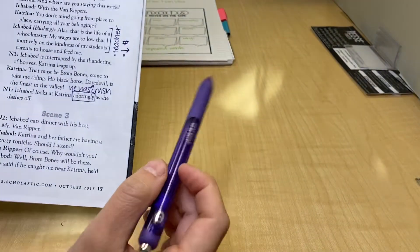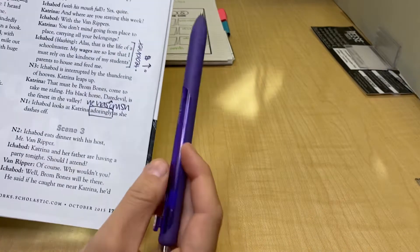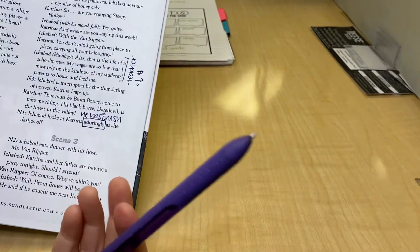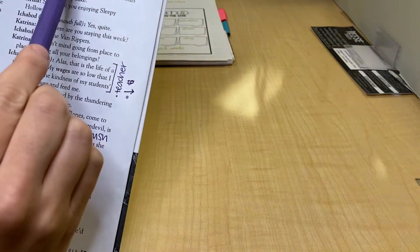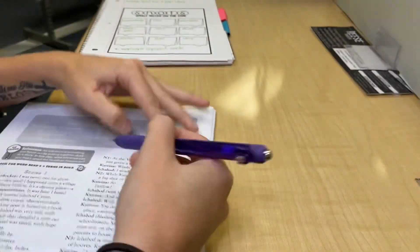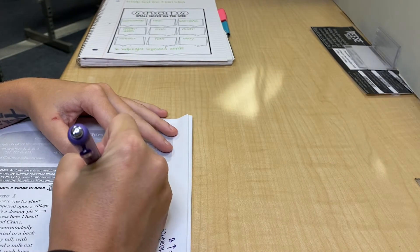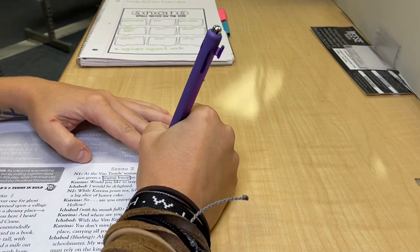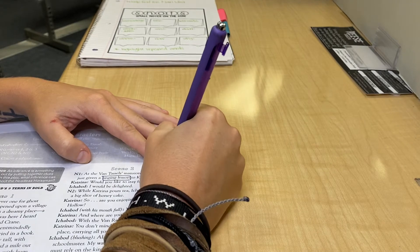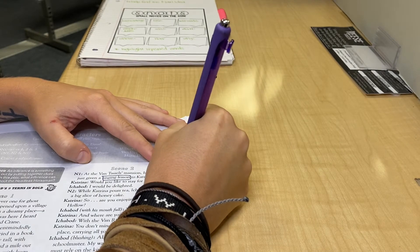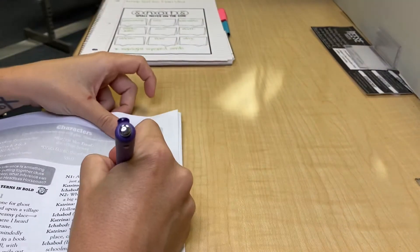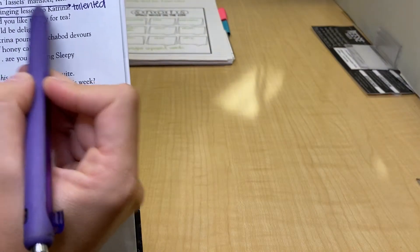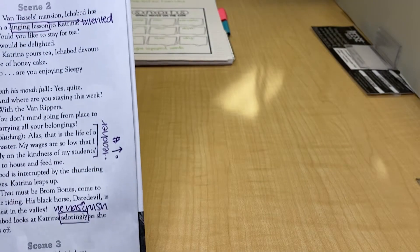And then going back up, trying to find a character trait, I want to point out too in scene two, what is Ichabod even doing? Well, he's at Katrina's house teaching her singing lessons. Well, in my mind, I'm thinking if he can teach singing lessons, well then Ichabod's got to be pretty, what do you think? What character trait would fit if you can sing really well? You guessed it, talented. So I'm just going to put a little side note pointing to it, that this leads me to believe that a character trait that describes Ichabod is that he is talented.